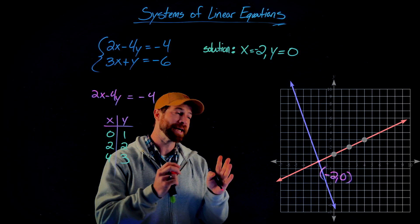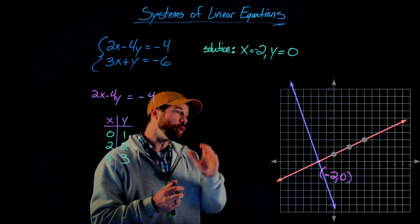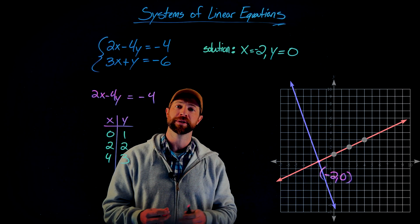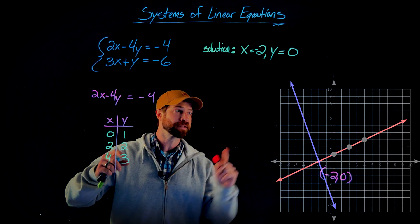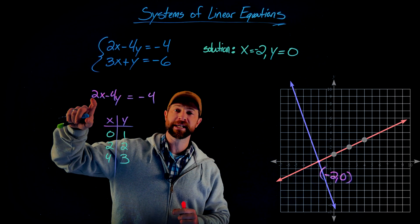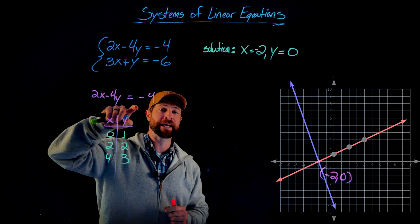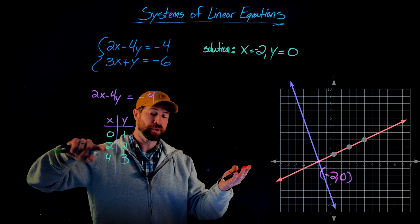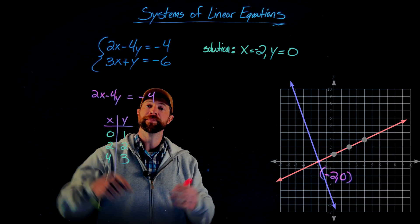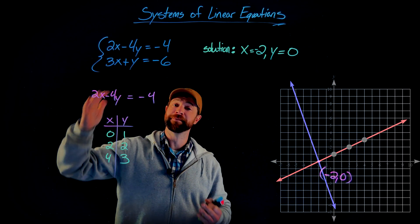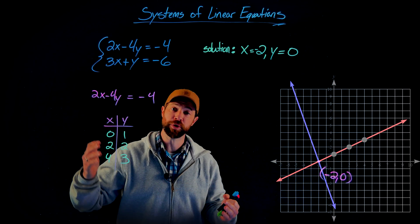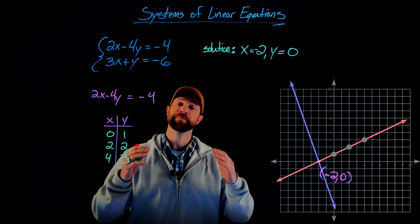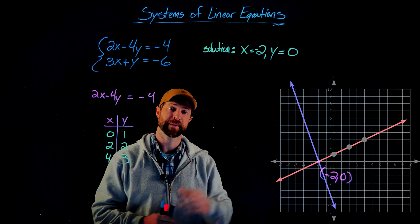Remember as you are looking at this visual: both of these lines represent the infinite solutions to these equations. For the red line — 2x minus 4y equals negative 4 — you can see solutions (0, 1), (2, 2), and (4, 3). The second equation also has infinite solutions represented by its graph. But the only solution that they both share is at negative 2 comma 0.